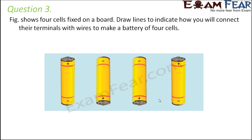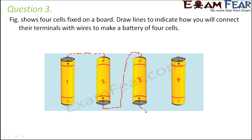Question number three: Figure shows four cells fixed on a board. Draw lines to indicate how you will connect their terminals with wires to make a battery. To make a battery, the positive terminal of one cell must always be connected to the negative terminal of the next cell and so on. So here with cell one, cell two, cell three, and cell four: the positive of cell one connects to the negative of cell two, positive of cell two connects to the negative of cell three, and positive of cell three connects to the negative of cell four.